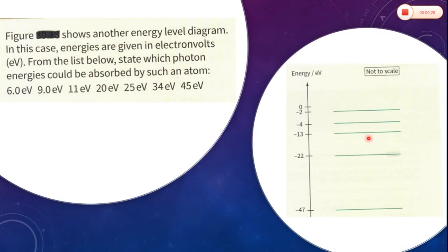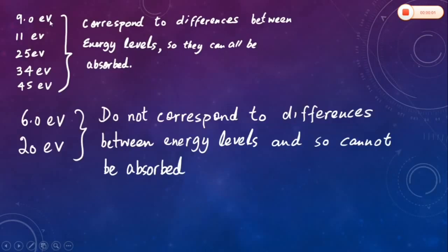Though the diagram is not to scale, we need to calculate the magnitudes of the energy only, as energy is a scalar quantity. From the list, 9 eV, 11 eV, 25 eV, 34 eV, and 45 eV correspond to differences between energy levels and so can all be absorbed. Whereas 6 eV and 20 eV do not correspond to any differences between energy levels and so cannot be absorbed.